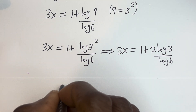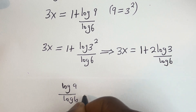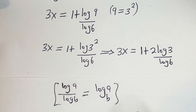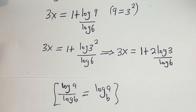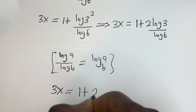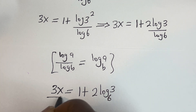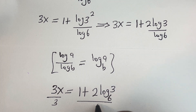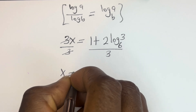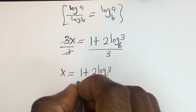Take note that if you have log a over log b, this is equal to log base b of a. So this can be written as 3x is equal to 1 plus 2 log base 6 of 3. Now let's divide both sides by 3, giving us x is equal to 1 plus 2 log base 6 of 3, all over 3.